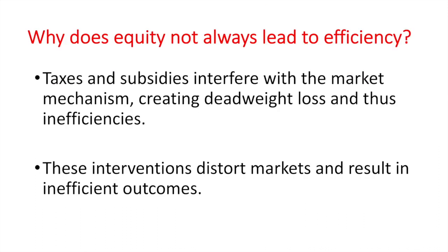Why does equity not always lead to efficiency? Taxes and subsidies interfere with the market mechanism, creating deadweight loss and thus inefficiencies. These interventions distort markets and result in inefficient outcomes. Efficient outcomes are based on a market free from government interventions. As soon as the government taxes or subsidizes production, it will either decrease or increase production, respectively.